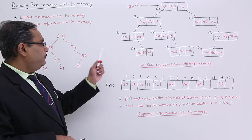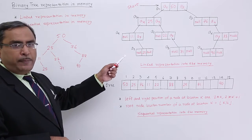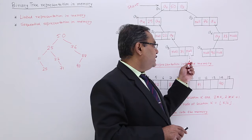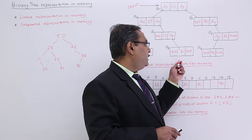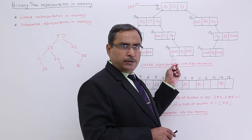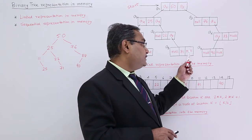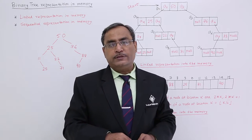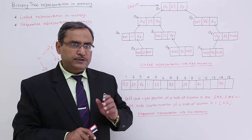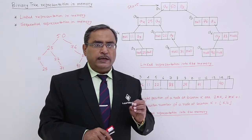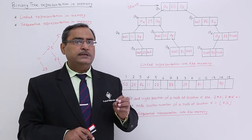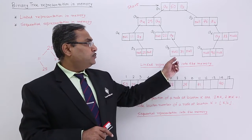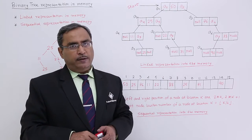Whenever a particular node is having no right child or left child or both, that field is filled up with null — with 0 — considering that 0 is not a valid node address. In this way, the tree can get represented.